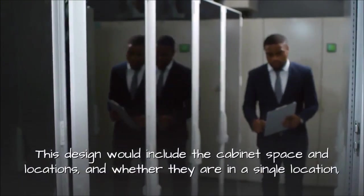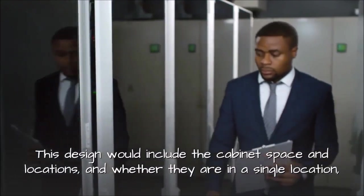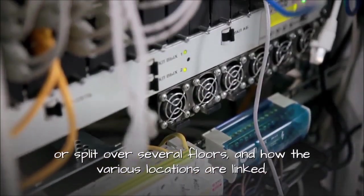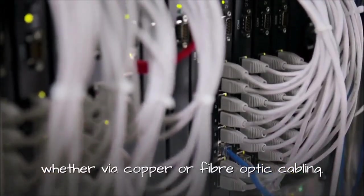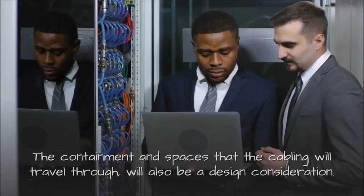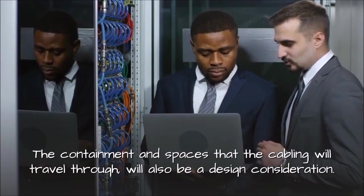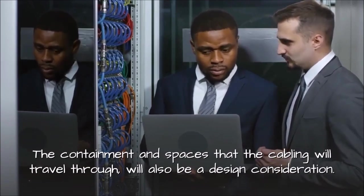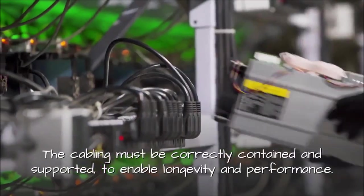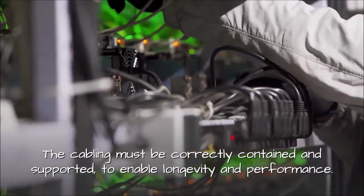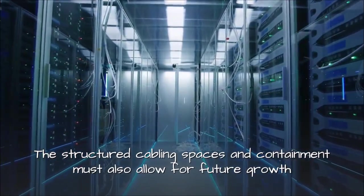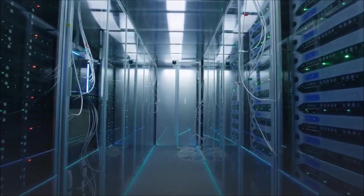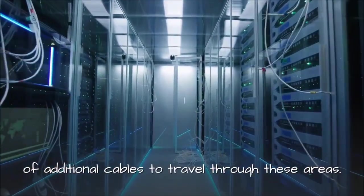This design would include the cabinet space and locations, and whether they are in a single location, or split over several floors. And how the various locations are linked, whether via copper or fiber optic cabling. The containment and spaces that the cabling will travel through will also be a design consideration. The cabling must be correctly contained and supported to enable longevity and performance.